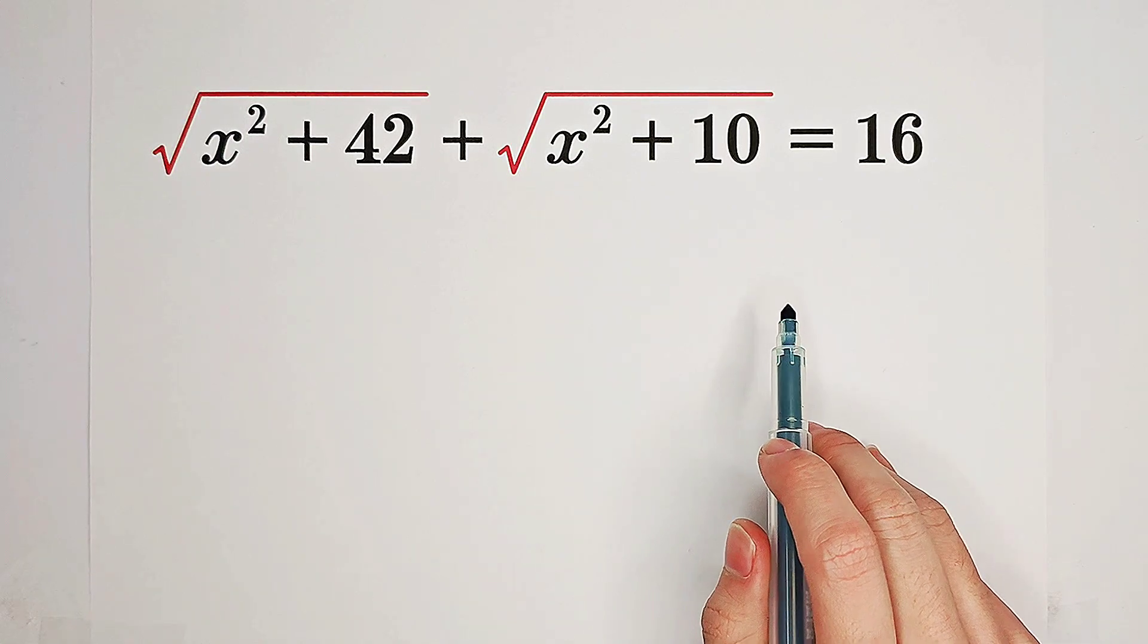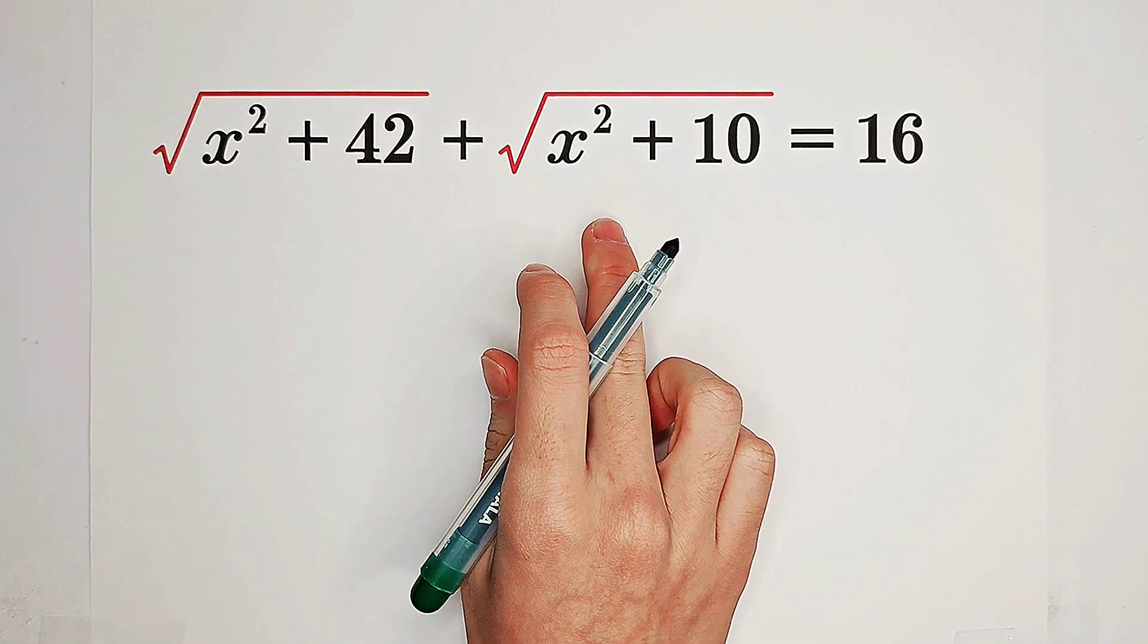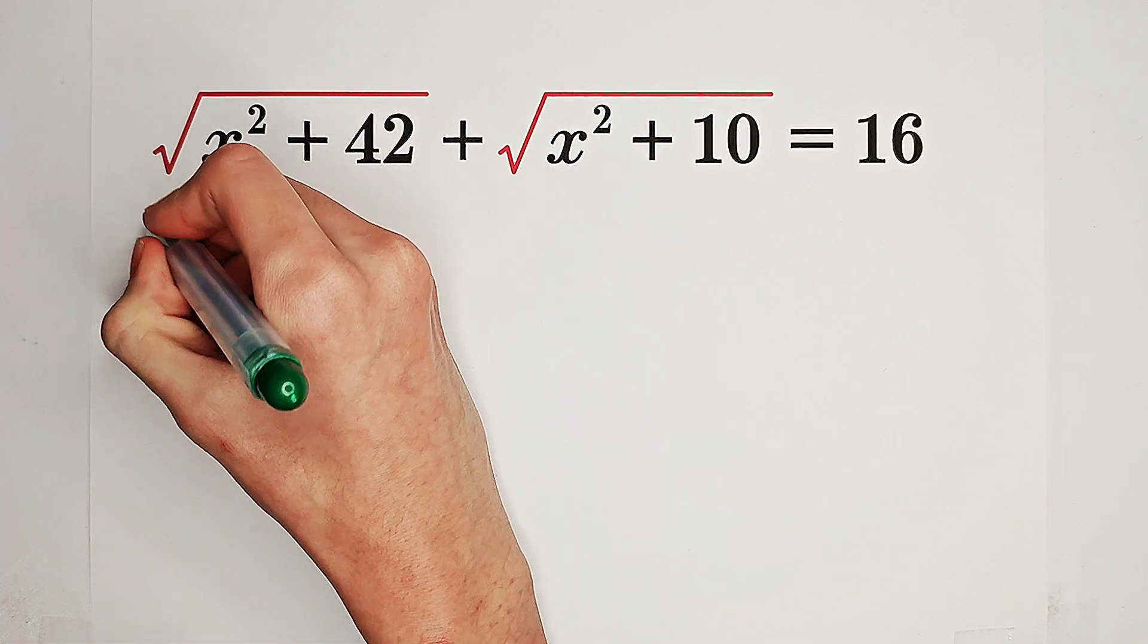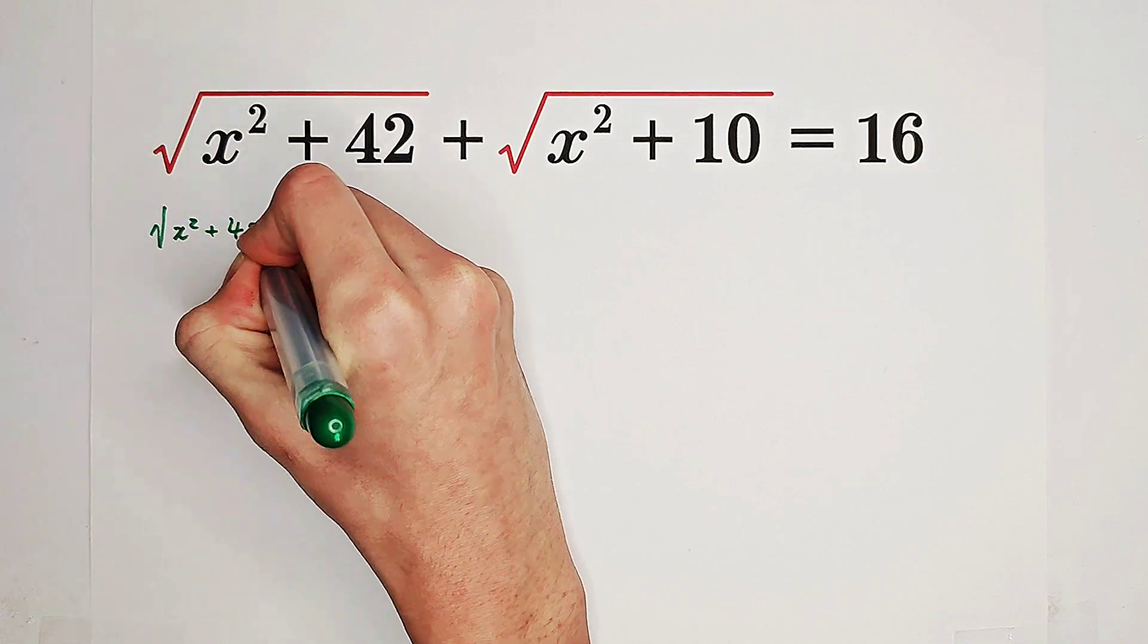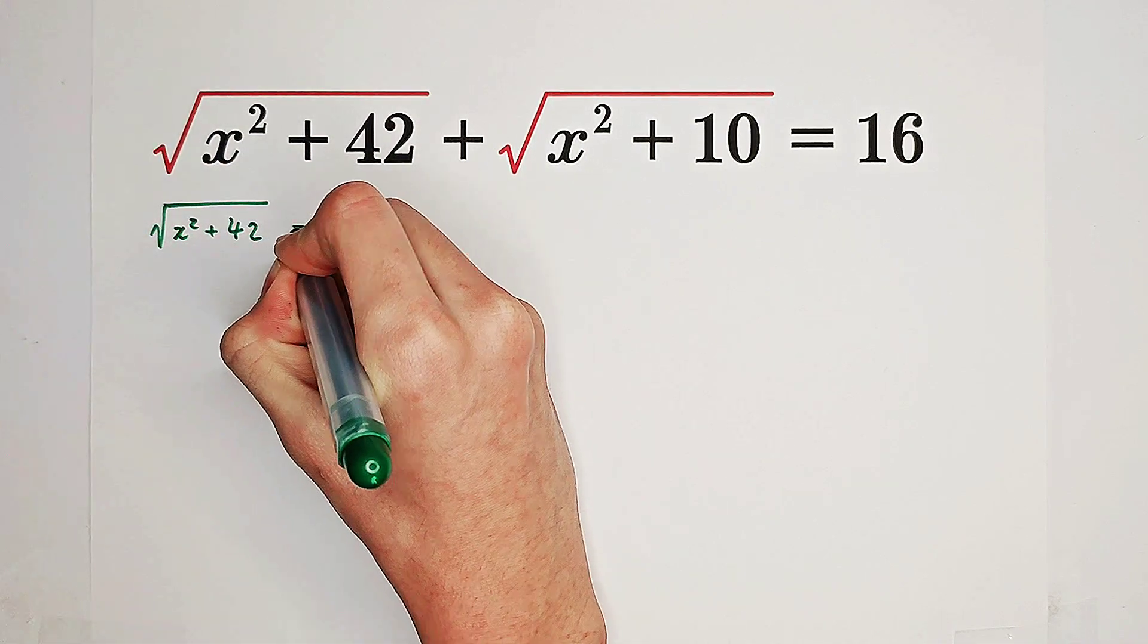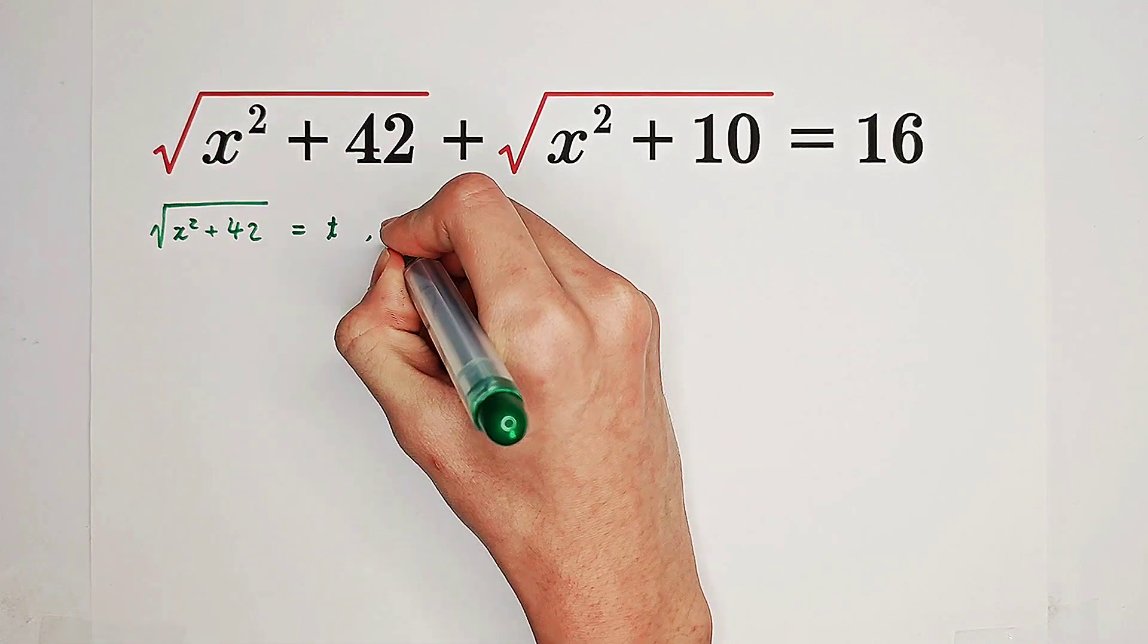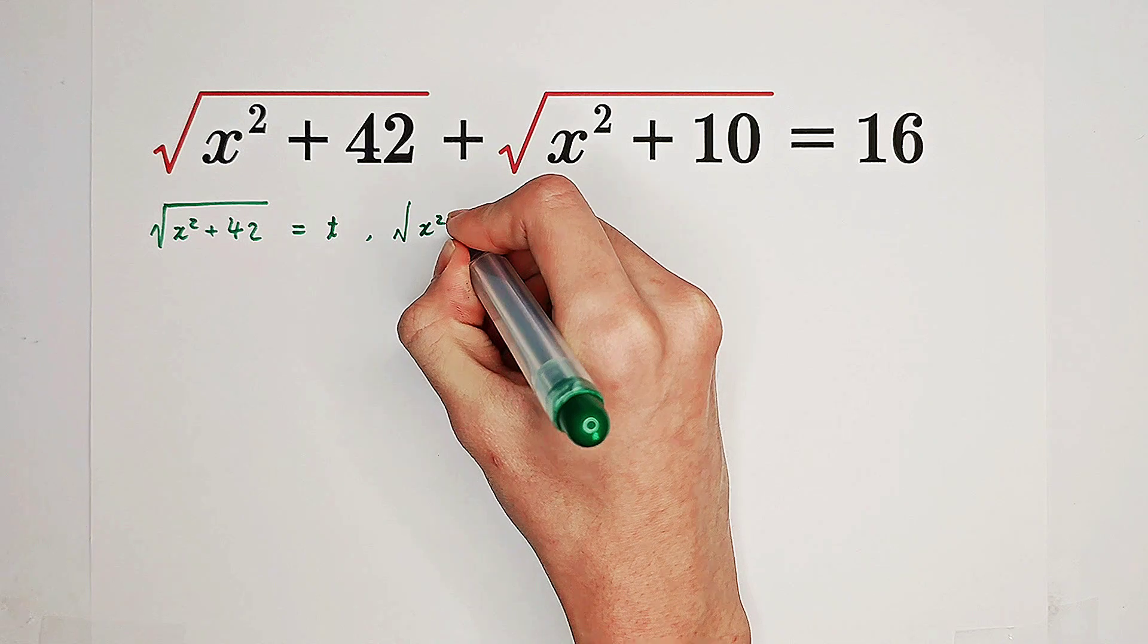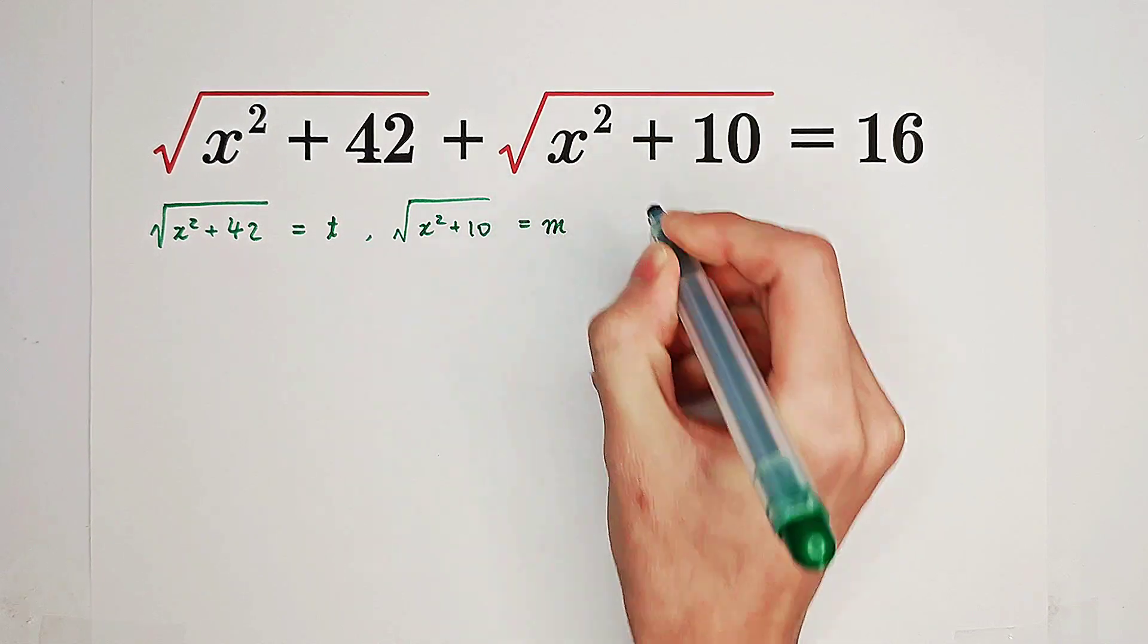What shall we do firstly? Substitution. Look, there are two square roots on the left-hand side, so we can substitute t for this square root and m for this square root.